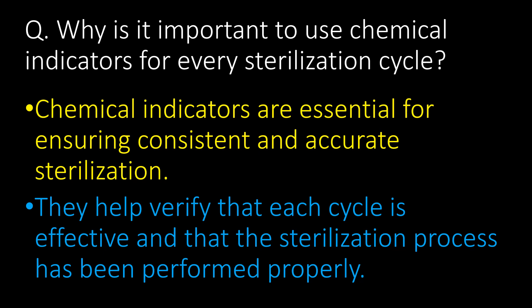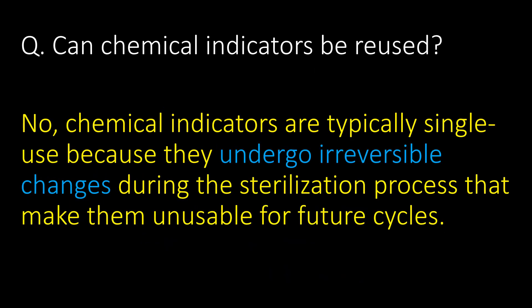Why is it important to use chemical indicators for every sterilization cycle? Chemical indicators are essential for ensuring consistent and accurate sterilization. They help to verify that each cycle is effective and that the sterilization process has been performed properly. A very frequently asked and important question: can chemical indicators be reused? The direct answer is no. Chemical indicators are typically single use because they undergo irreversible changes during the sterilization process that make them unusable for future cycles.